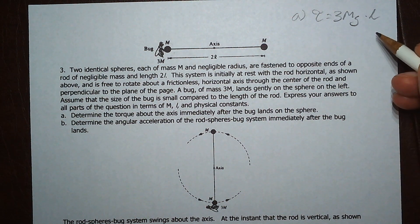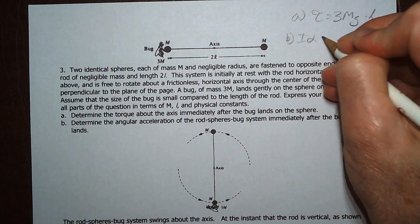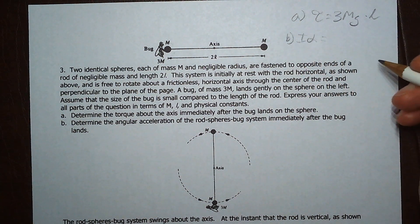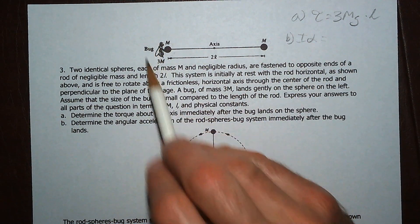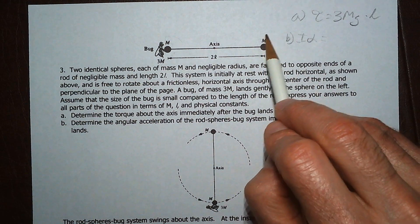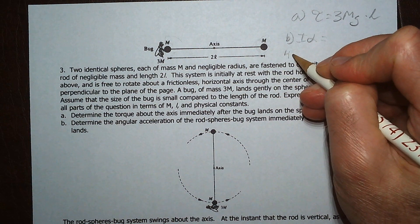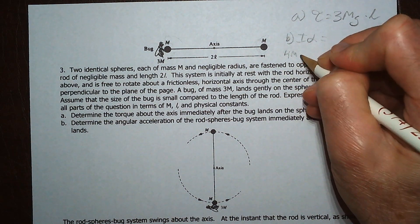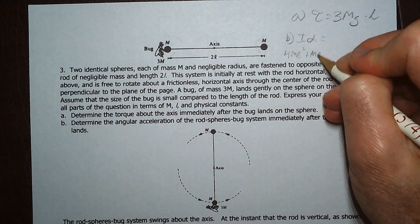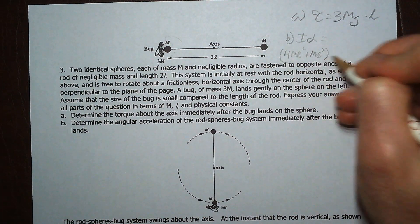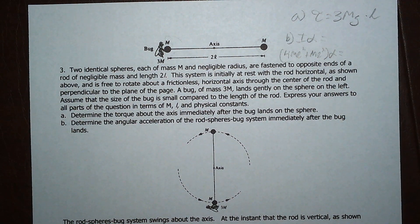So torque equals I alpha, so it would be I alpha equals this. I is going to be the rotational inertia of this plus the rotational inertia of this plus the rotational inertia of this, so it's going to be 4ML squared plus this one here, L squared times alpha equals the torque, so we can find the angular acceleration.